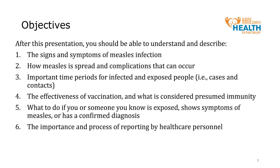After this presentation, there are several things you should understand about measles and be able to describe. First are the signs and symptoms of measles. Second is how measles is spread in the community and possible complications that may occur. Third are important time periods for cases and close contacts, including incubation, infectious, quarantine, and isolation periods. Fourth is measles vaccine effectiveness and how to determine if an individual is immune. Fifth is what to do if you or someone you know is exposed, is showing symptoms, or has a confirmed diagnosis of measles. And lastly, we will learn the importance of reporting by healthcare personnel and what the reporting process entails.